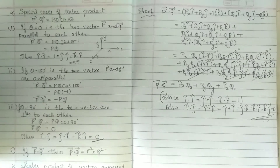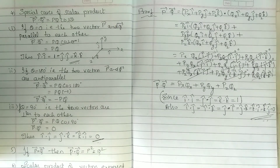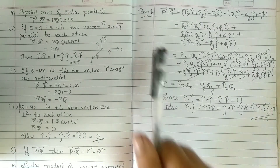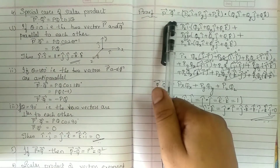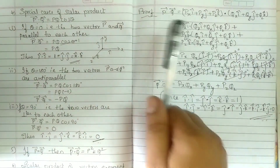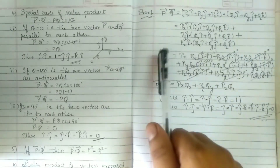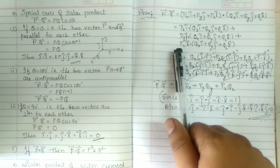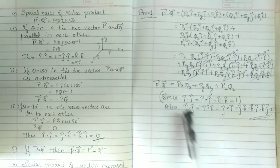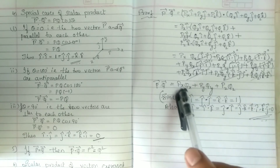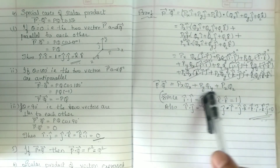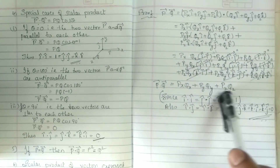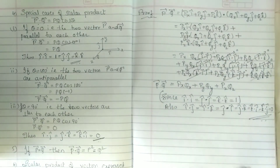Hence we can state that the scalar product of two vectors expressed in terms of rectangular components is: P dot Q equals PxQx plus PyQy plus PzQz. So when finding the scalar product, no need to multiply everything — only multiply the corresponding components and add them.